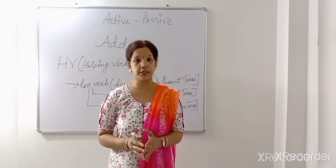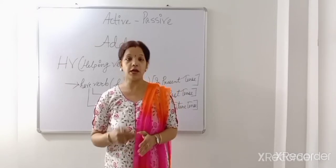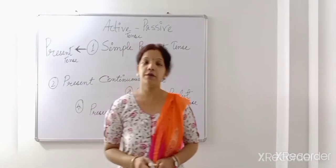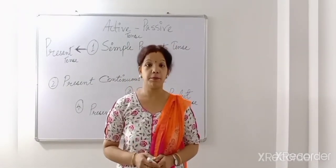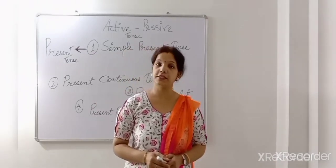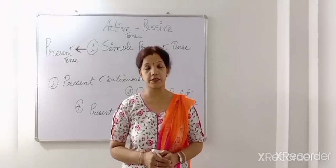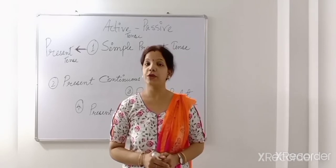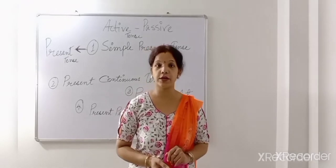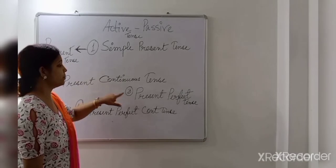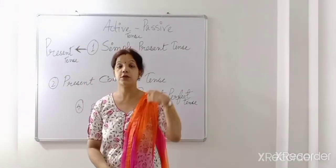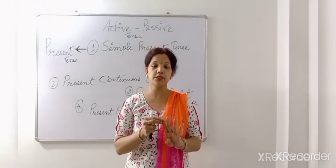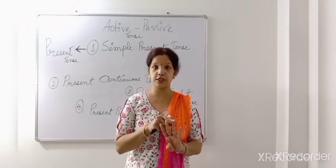Now in the next part, I will teach you how to change simple present tense from active voice to passive voice. But before that, you should have a clear idea about tense. There are three types of tense: present, past, and future. In the present part, we have four categories: simple present tense, present continuous, present perfect, and present perfect continuous tense. But in voice change, out of four, we need the first three.